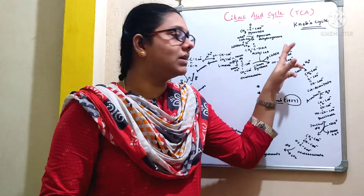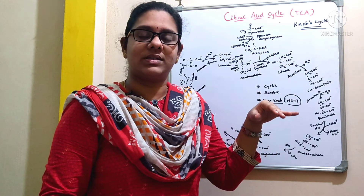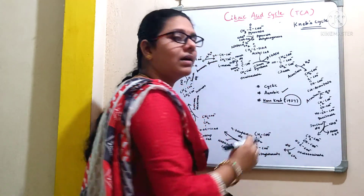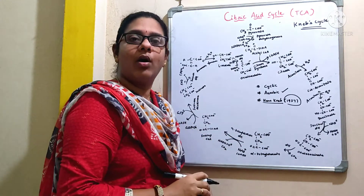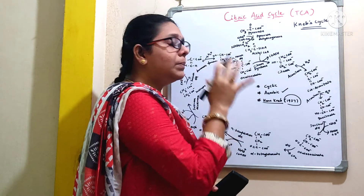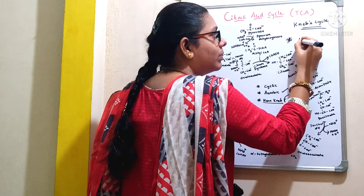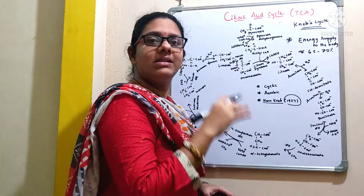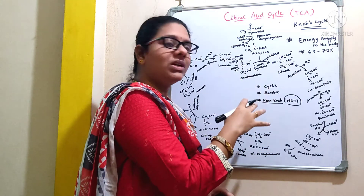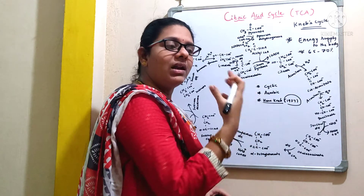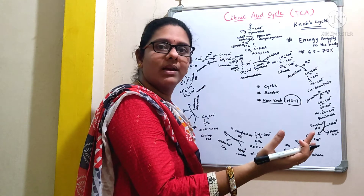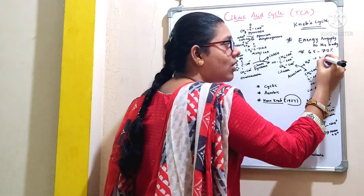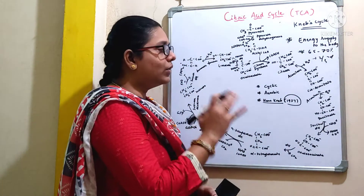Glycolysis is a pathway that operates both under aerobic and anaerobic conditions — that is, in presence of oxygen and in absence of oxygen. But this TCA pathway operates only under aerobic conditions, meaning only in the presence of oxygen. This is one of the important metabolic pathways for the energy supply to the body — about 65 to 70% of ATP is synthesized by this pathway. Generally, two-thirds of the oxygen we consume is utilized by this pathway.